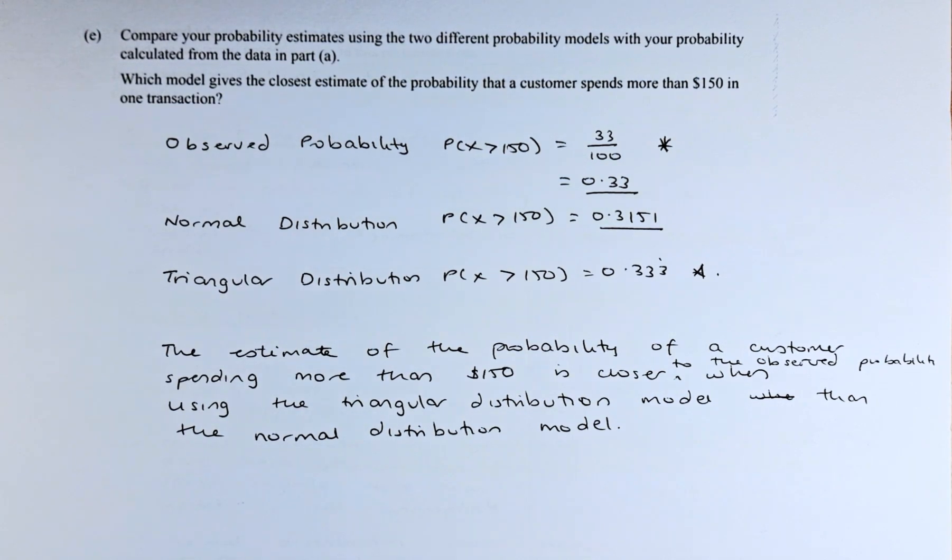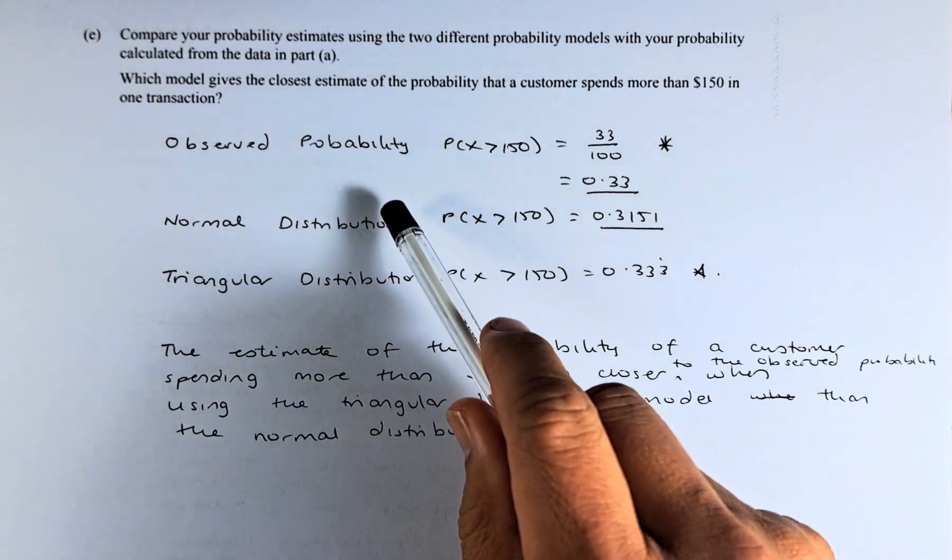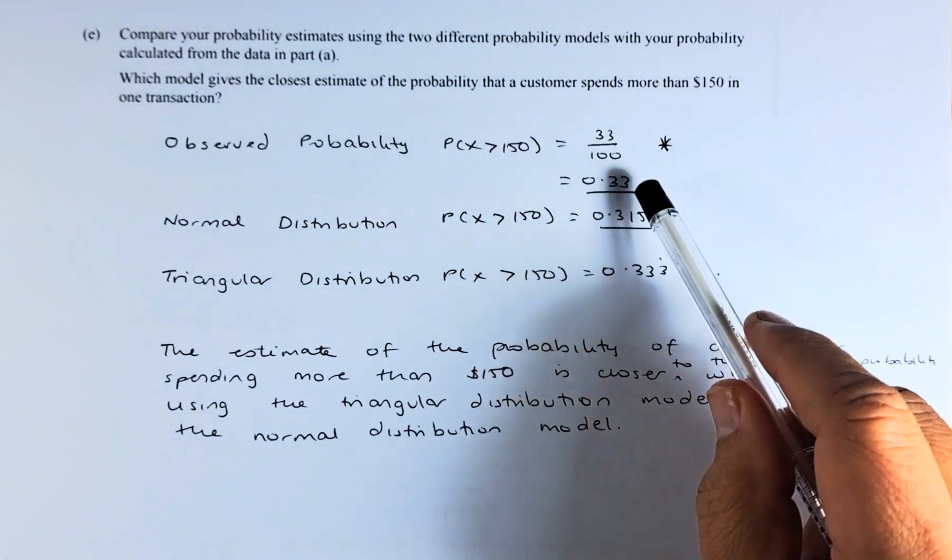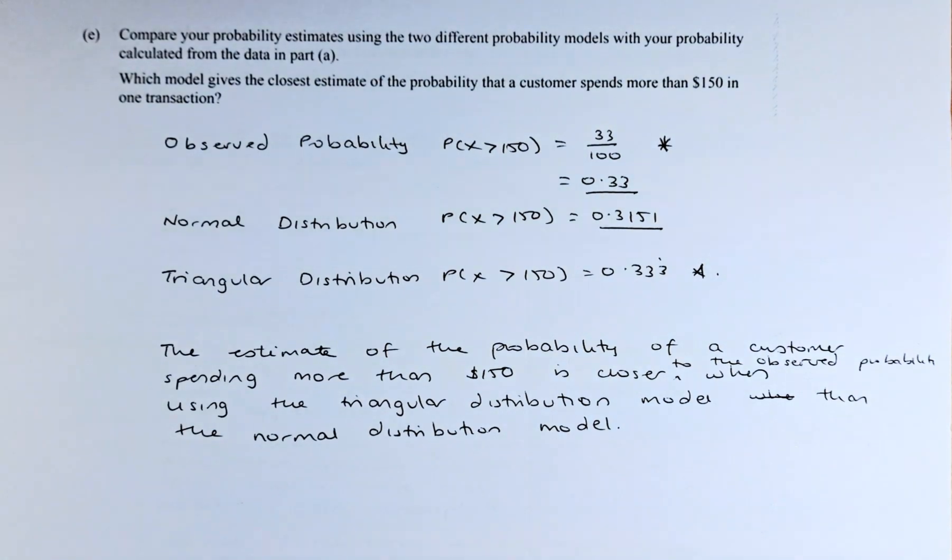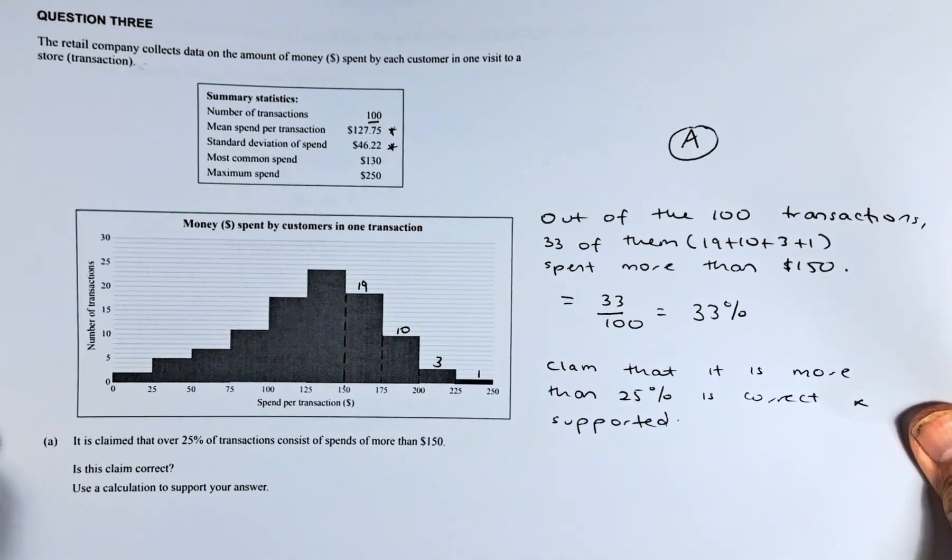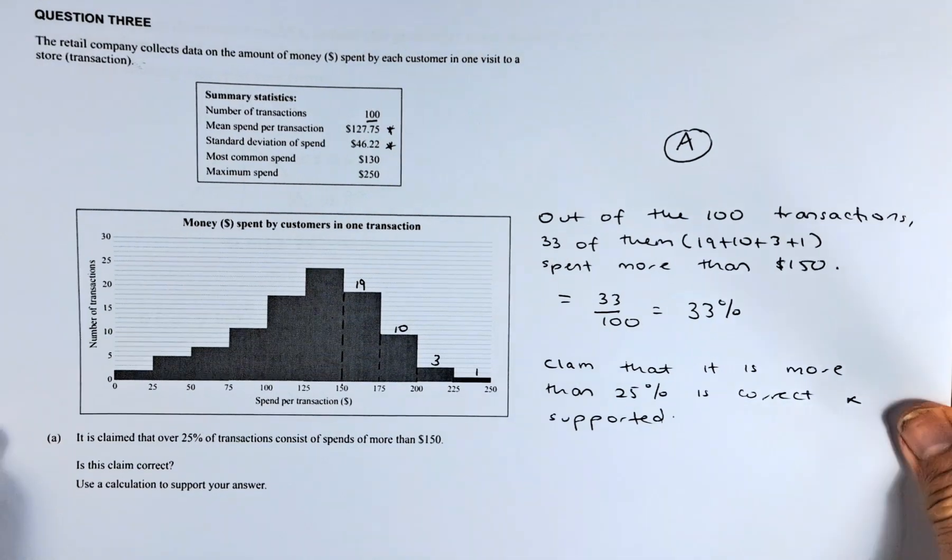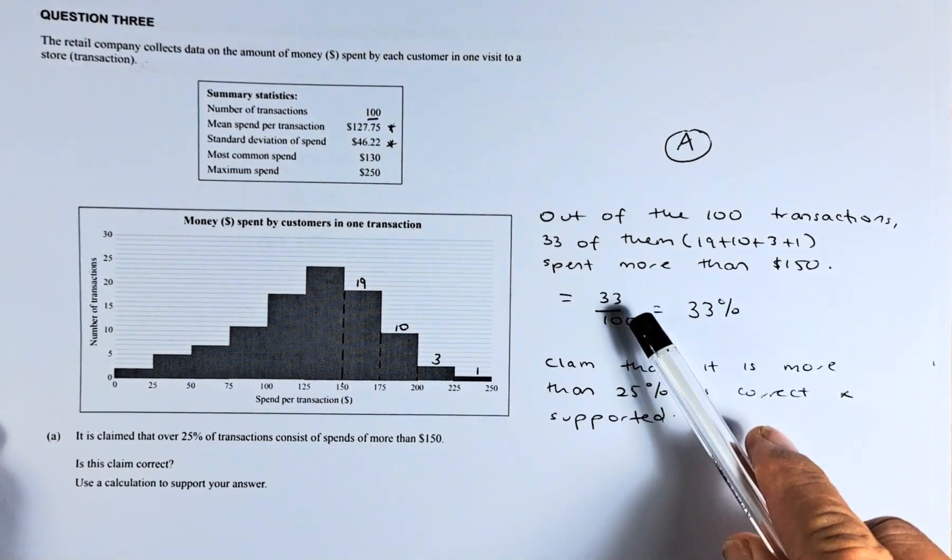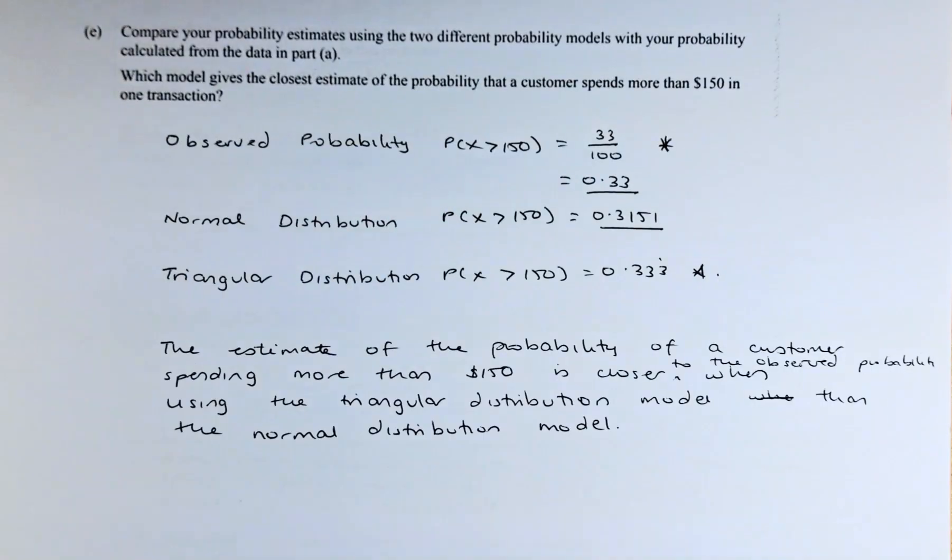This we need to go back to the one we have done before. So I'm going to go through step by step. The observed probability for more than $150 is 0.33 or 33 over 100. That is the question we done before. You can see on the right hand side there - 33%, 33 over 100. That is the observed probability.